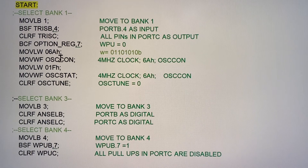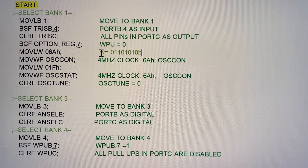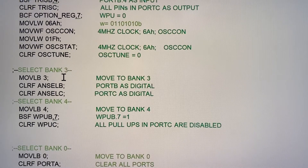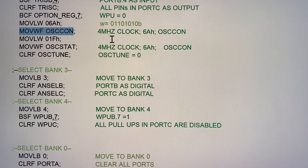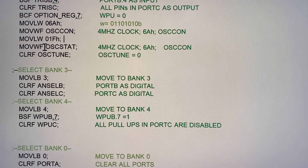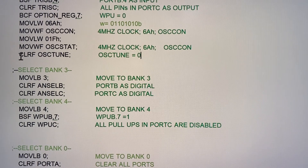Remember, every time you put a semicolon in the editor the text turns green, meaning it is a comment. Now I'm moving the contents of W, which is 6A, to the file OSCON. OSCON gets loaded with this number to work at four megahertz. Then I move 1F hexadecimal to W and from W to OSSTAT, so I'm working at four megahertz. I'm also clearing OSTUNE so the oscillator is set at zero — at four megahertz — meaning we are not tuning the oscillator.